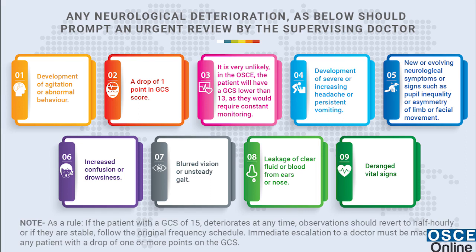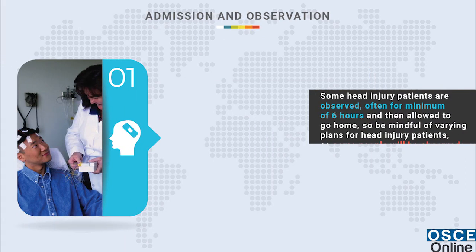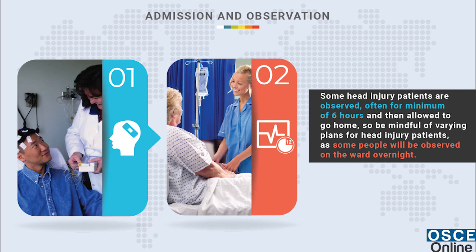As a rule, if a patient with a GCS of 15 deteriorates at any time, observations should revert to half-hourly, or if they are stable, follow the original frequency schedule. Immediate escalation to a doctor must be made for any patient with a drop of one or more points on the GCS. Some head injury patients are observed for a minimum of six hours and then allowed to go home.